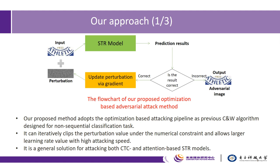In our proposed method, we adopt the optimization-based attacking pipeline as the previous C&W algorithm designed for the non-sequential classification task. This is the flowchart of our proposed method. It can iteratively clip the perturbation values under the numeric constraint and allows a larger learning rate with higher attacking speed. It is a general solution for attacking both the CTC and attention-based STR models.